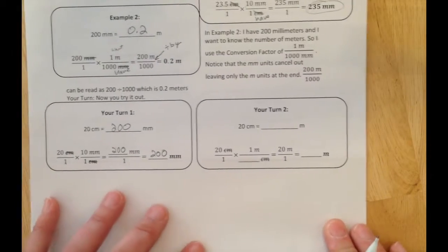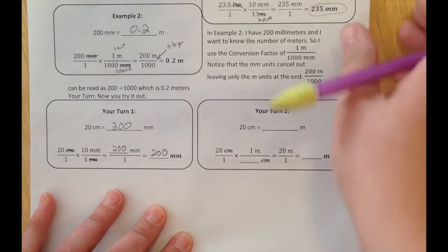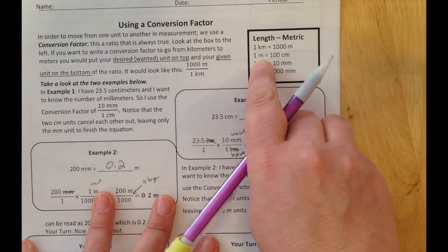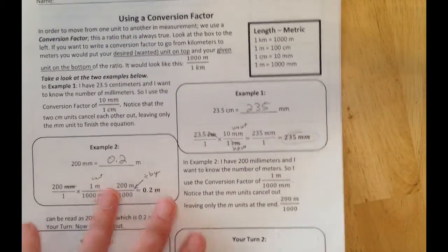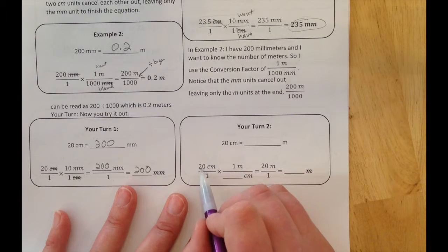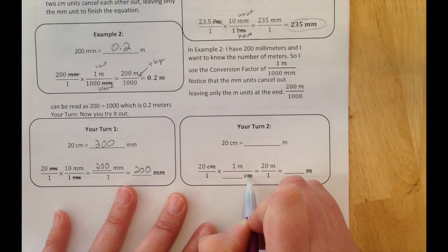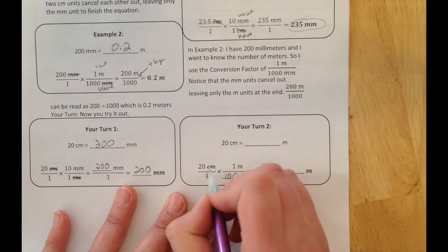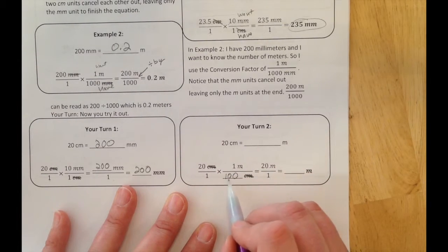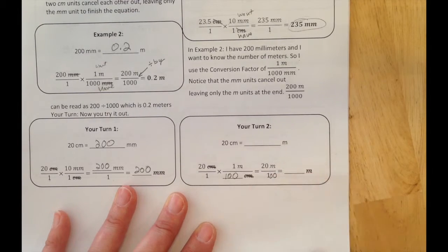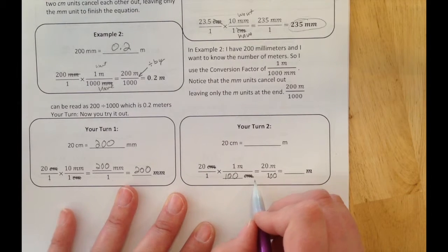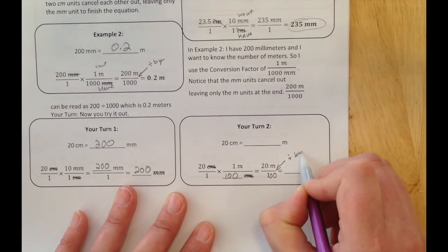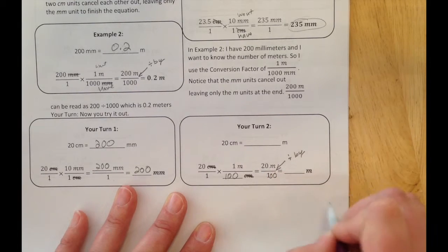Let's try the second one. I have 20 centimeters and want it in meters. It's not the same thing because 1 meter has 100 centimeters. So my conversion factor is different. 20 centimeters over 1, and I need to get rid of centimeters. That's 100 centimeters for every 1 meter. My centimeters cross out. I have 20 times 1 over 100, which gets me 20 divided by 100, which is 0.2 meters.